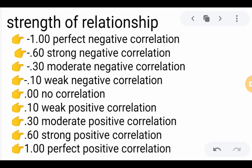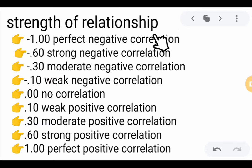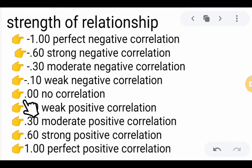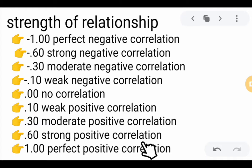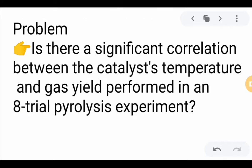For the strength of relationship, we have negative magnitudes representing negative correlation, with -1 being perfect negative correlation. At 0, there is no correlation at all. We also have positive magnitudes, with +1 as perfect positive correlation and 0.10 as a weak positive correlation. The signs exhibit the strength of the relationship — whether it is negative, no correlation, or positive.